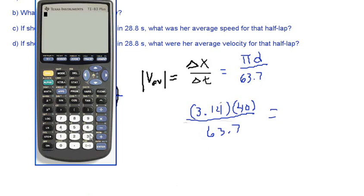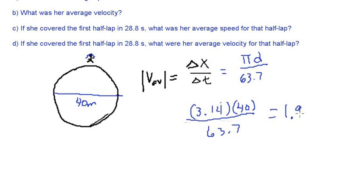Okay, so we have 3.14 times 40. Okay, and then I'm going to get that number and divide it by 63.7. And it's going to give me 1.97. So that's the answer. So 1.97.